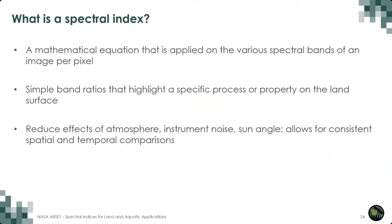Multispectral remotely sensed imagery contains a combination of bands that creates a composite image for interpretation and analysis. The individual bands can be transformed to gain certain features and patterns or to make things stand out better. This is done with a mathematical equation applied to each spectral band per pixel. Simple ratios between the reflectance of the land surface can highlight representations of ground objects like vegetation. The benefit of these band ratios is that they are often simple, broadly applicable across different types of imagery, and they reduce the effects of the atmosphere, instrument noise, and sun angle.